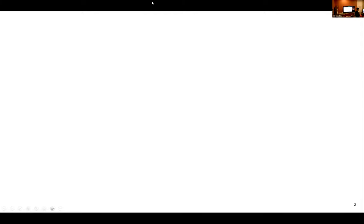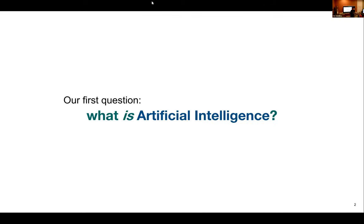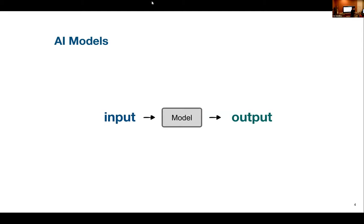Our first question is: what is artificial intelligence? In our AI world, we're going to call an AI model anything that takes some sort of input and gives us some other sort of output. There are a lot of different AI models we're going to explore over this weekend, but essentially all of these models take some sort of input and work in different ways to make different predictions.